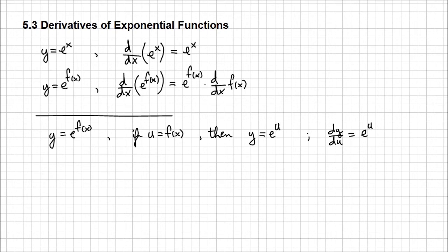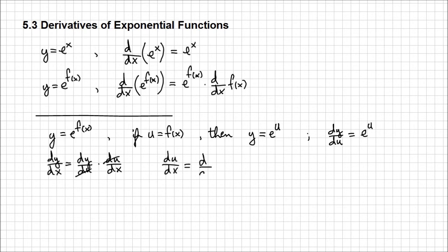The chain rule states that dy/dx is the product of the derivatives of the functions that compose our final function. So it's going to be dy/du times du/dx, because the du cancels out, giving us dy/dx. We already have dy/du; all we need is du/dx, which is d/dx of f(x), because that is what u equals. So now we have both components, dy/du and du/dx.